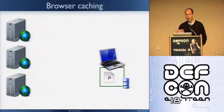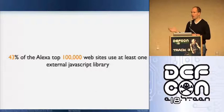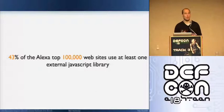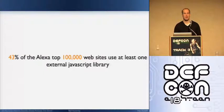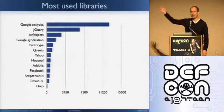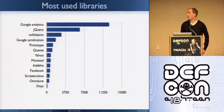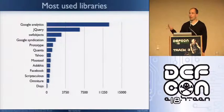I did a bit of crawling on the Alexa top 100,000 websites, and I see that 43% at least have an external JavaScript. Can you guess which is the most popular JavaScript library in the world right now? Google Analytics — you're right. And the second one is jQuery. So the first one is Google Analytics, followed by jQuery, then SWFObject, which is basically the library you use to load Flash objects into your page. Google Ads is fourth, and then you have Prototype, another JavaScript framework.